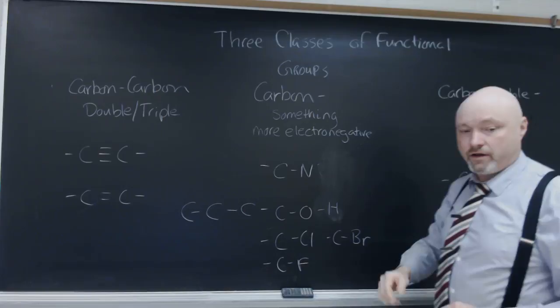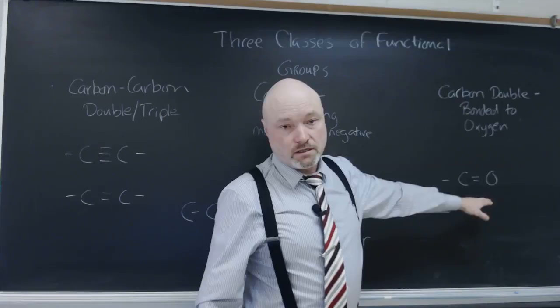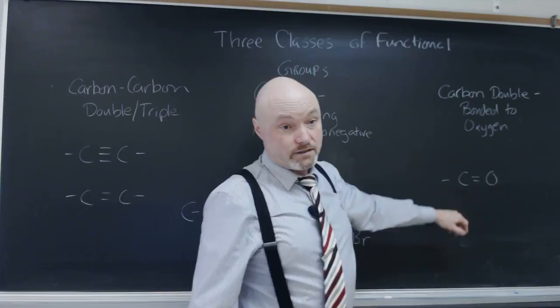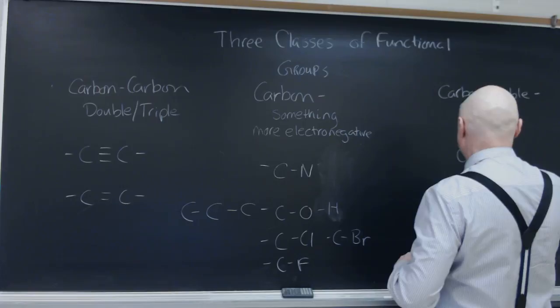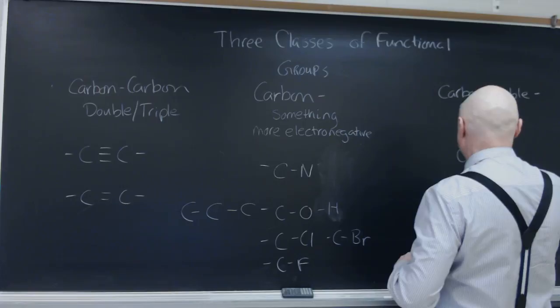The last class of functional group is this one where the carbon is double bonded to an oxygen. And so once again, the oxygen is taking the electrons for a greater percentage of the time away from the carbon, and so the carbon tends to be a little bit positive. The double bonded oxygen tends to be negative. Once again, the negatives and the positives can overlap, attract each other. You'll raise the boiling point, you will raise the melting point, as well you will increase the solubility in water.